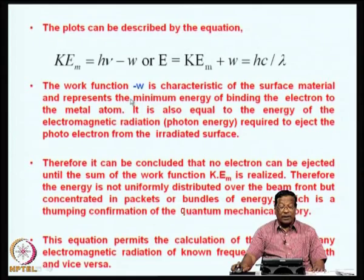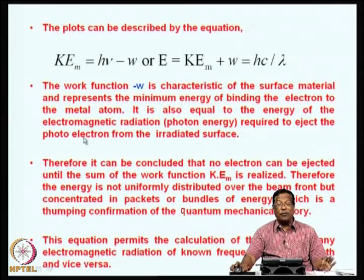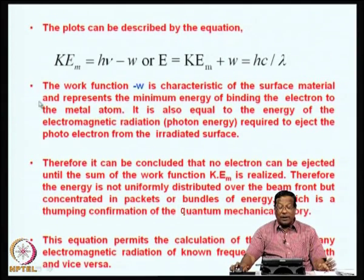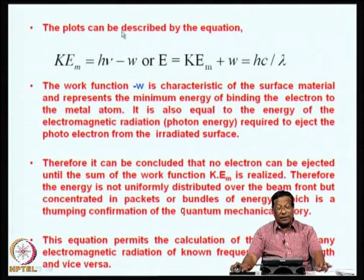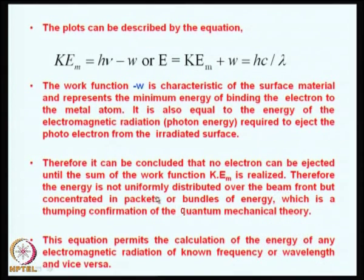The equation can also be written as E = KE_m + W = hc/λ, where H is Planck's constant, c is the velocity of light, and λ is the wavelength of the incoming radiation. The work function W is a characteristic of the surface material on which the cathode is coated, representing the minimum energy of binding the electron to the metal atom. It is also equal to the photon energy required to eject a photoelectron from the irradiated surface. No electron can be ejected until the work function KE_m is realized — energy is concentrated in packets or bundles, that is, energy is quantized.